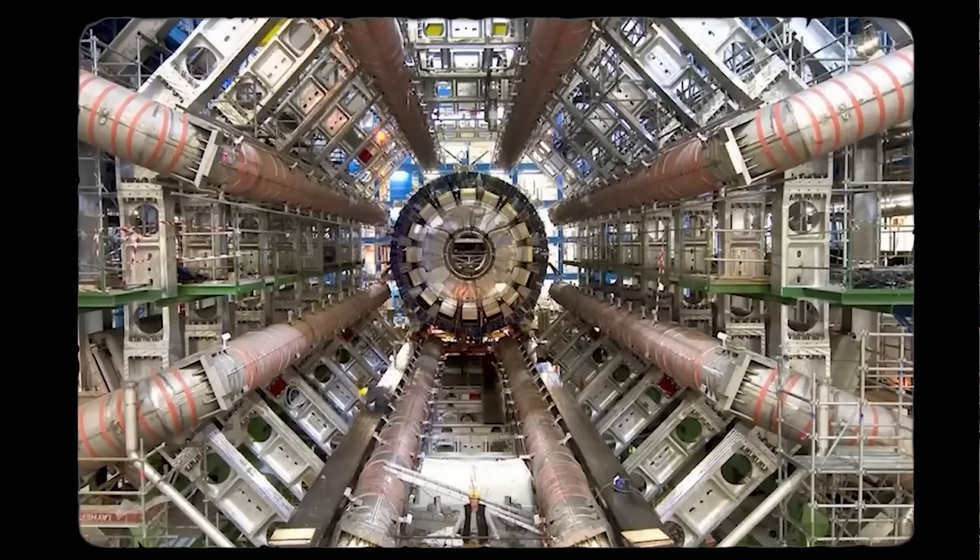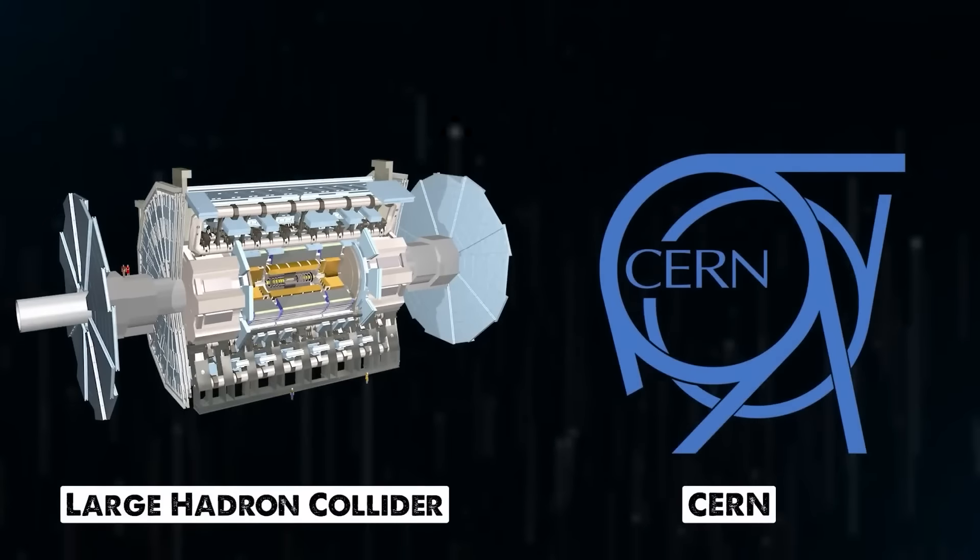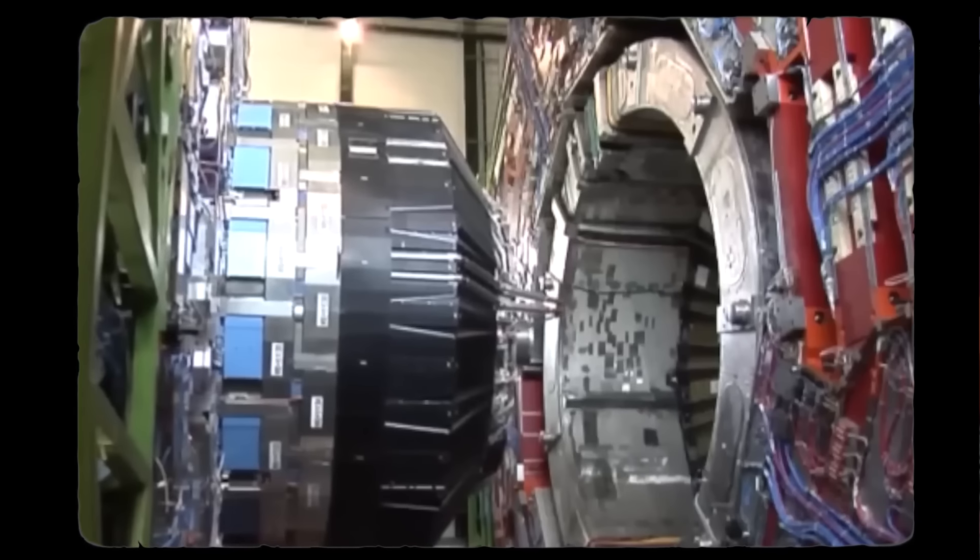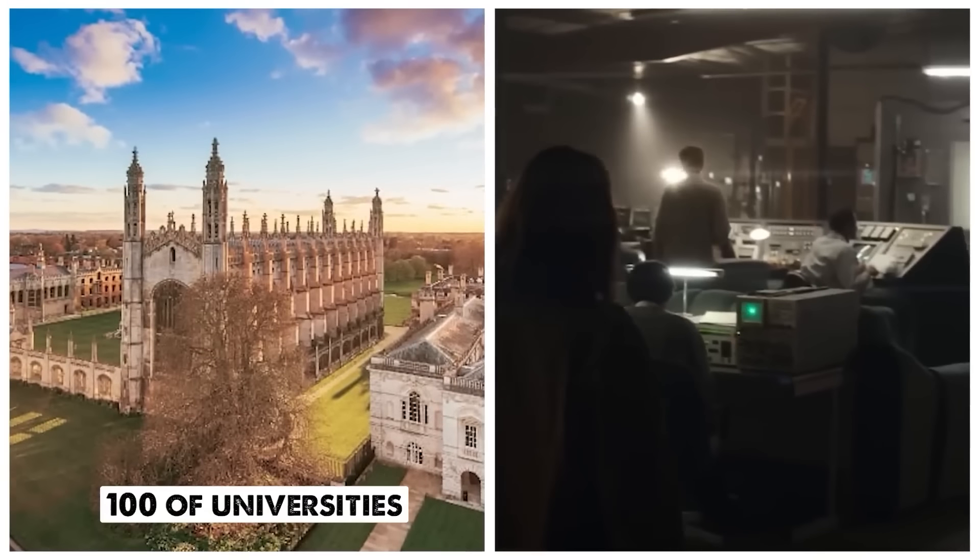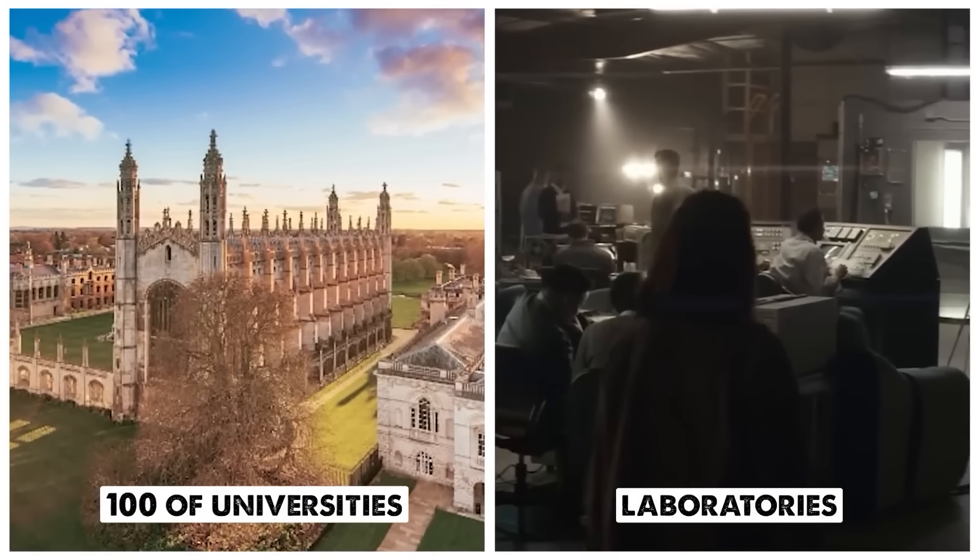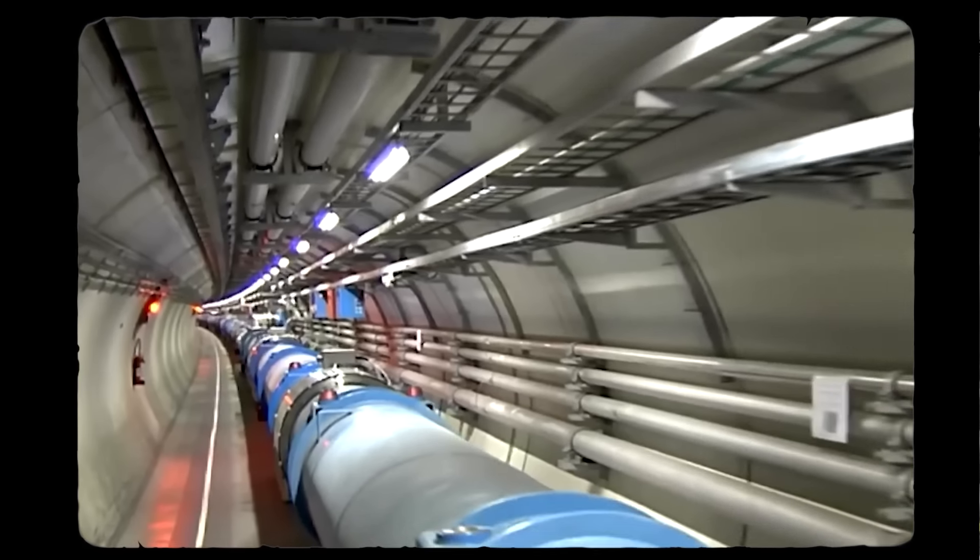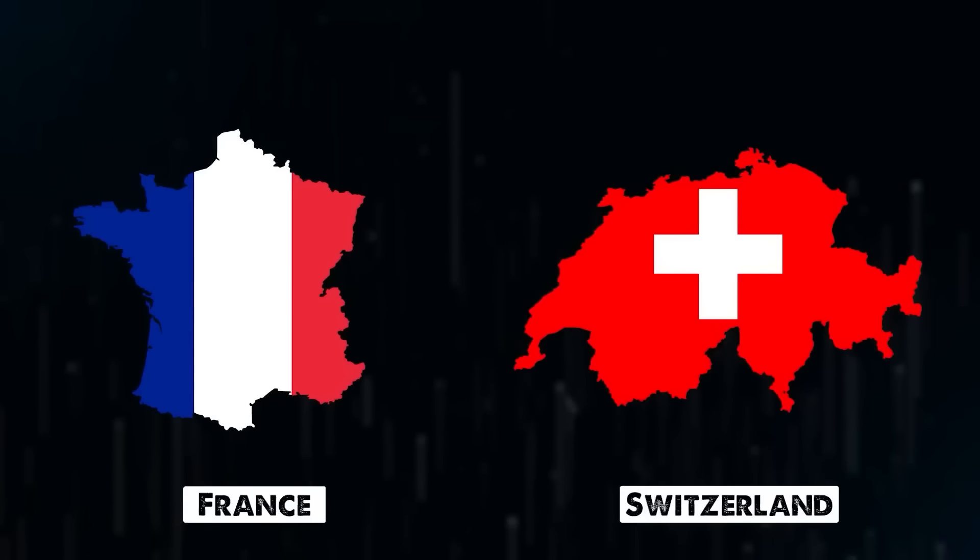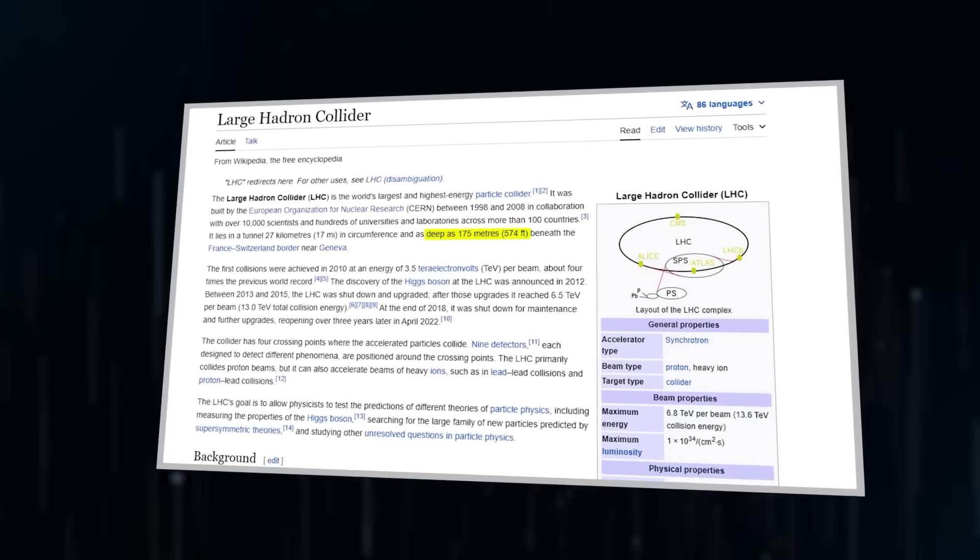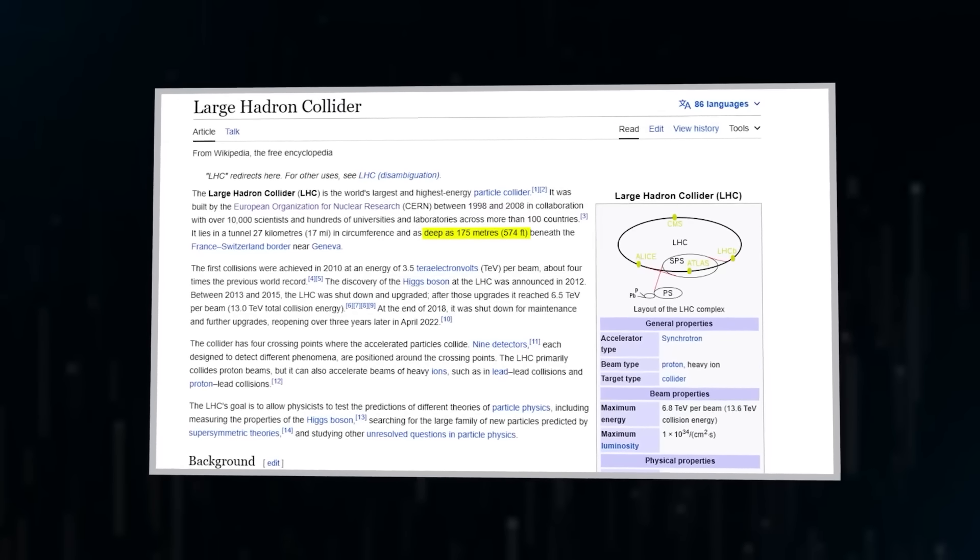According to Musk, the Large Hadron Collider, constructed by CERN between 1998 and 2008, holds the title of the largest and highest energy particle collider in human history. This colossal endeavor involved over 10,000 scientists, numerous universities, and laboratories from more than 100 countries. Situated in a tunnel with a circumference of 27 kilometers beneath the border between France and Switzerland, near Geneva, it operates approximately 175 meters underground.